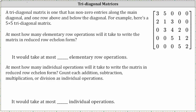A tridiagonal matrix is one that has nonzero entries along the main diagonal and one row above and below the diagonal. For example, here is a five by five tridiagonal matrix. Notice how there are nonzero entries along the main diagonal. Because this is a five by five matrix, there are five entries along the main diagonal, and there are also entries one row above and one row below the main diagonal. Notice there are four entries above and four entries below the main diagonal.